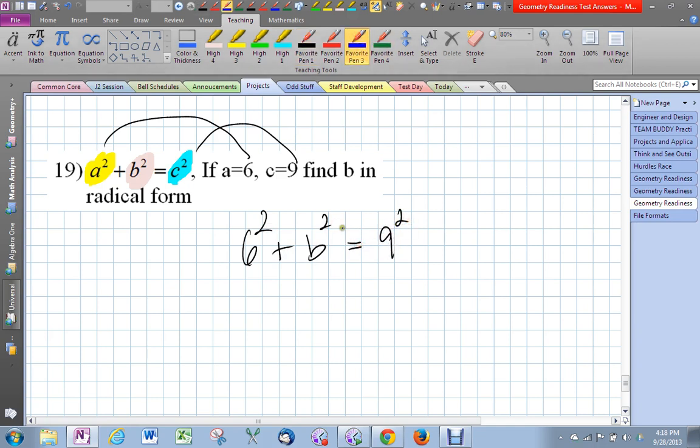And now I need to isolate b. So this is going to be 36 plus b squared equals 81. And so now I'm going to take the 36 and move it on the other side. I have to subtract 36 from both sides. That's going to be b squared equals, I think that is 45.